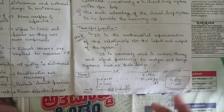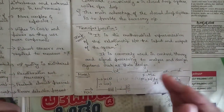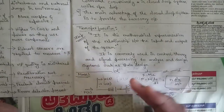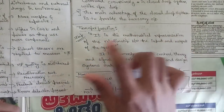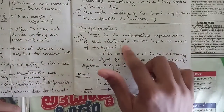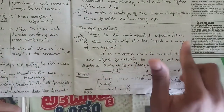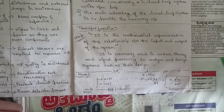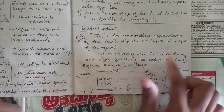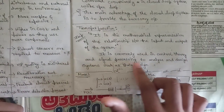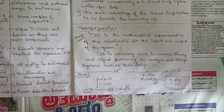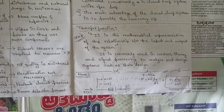We also discussed the transfer function. The transfer function is the mathematical representation of the relationship between the input and output of a particular system. It is commonly used in control theory and signal processing to analyze and design systems.